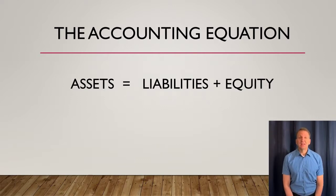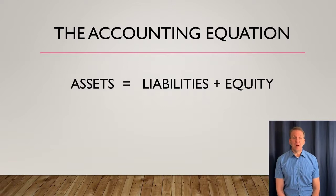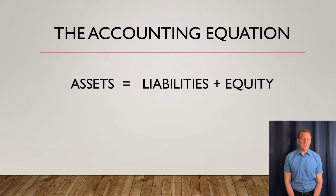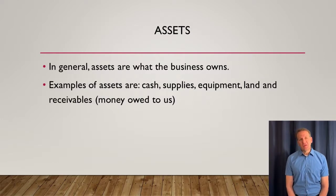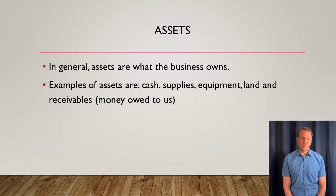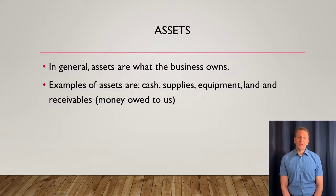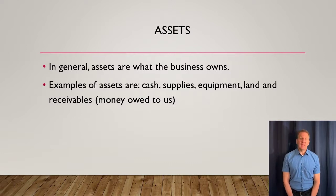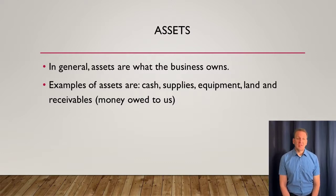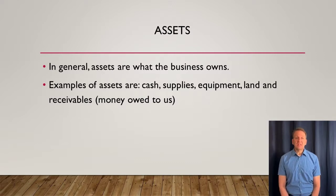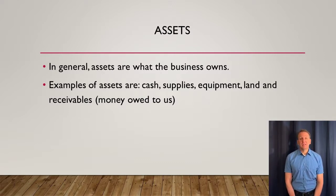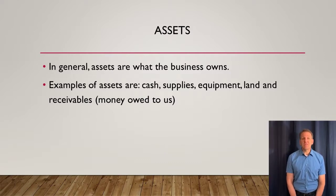Let's take a look at the different parts of the accounting equation to make sure we understand what each part means. The first one are assets. Assets are what the business owns. Examples of assets are cash, supplies, buildings, equipment, land, and accounts receivable. So a business can own all of these things.